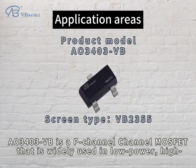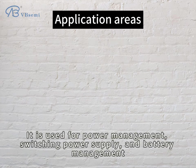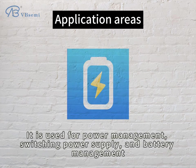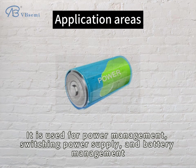AO-303VB is a P-channel MOSFET that is widely used in low power, high efficiency power management, and switching power supply systems. It is used for power management, switching power supply, and battery management.